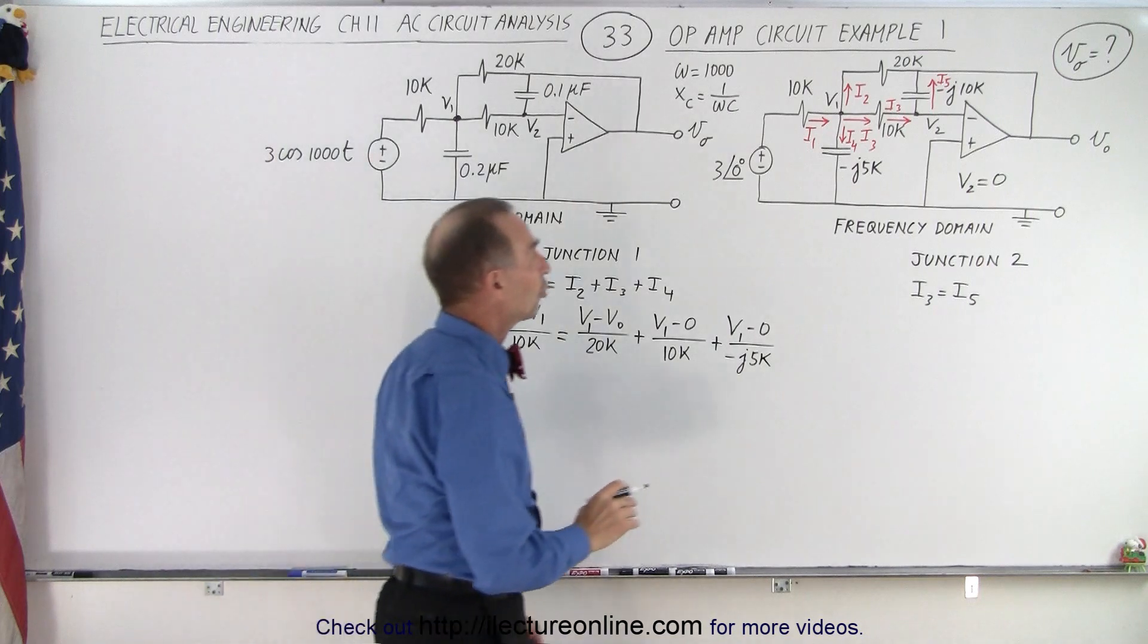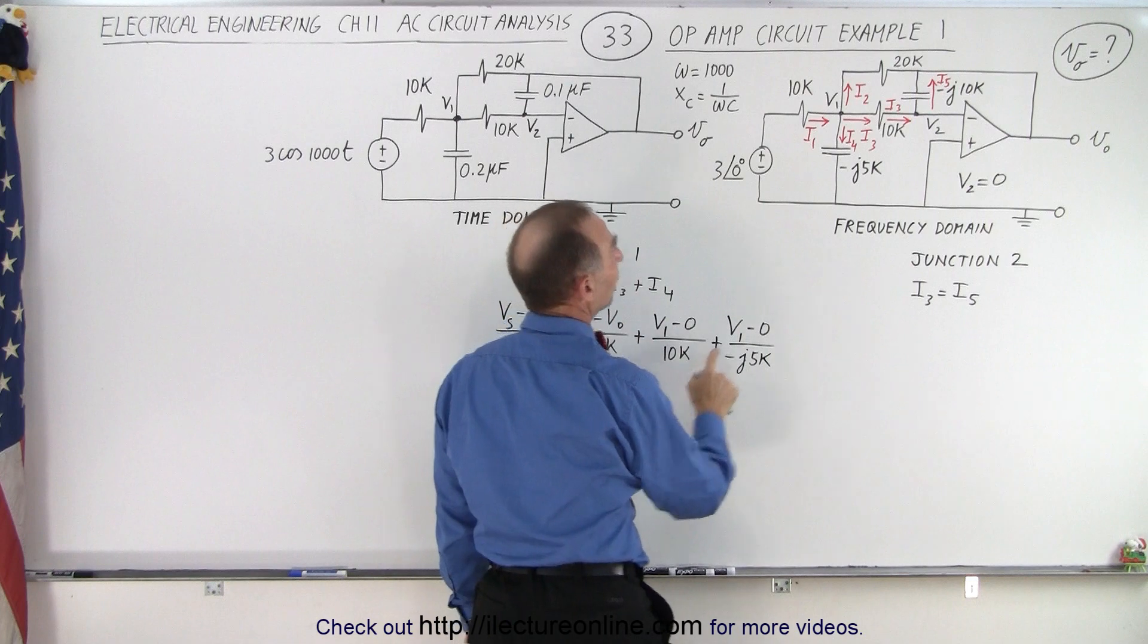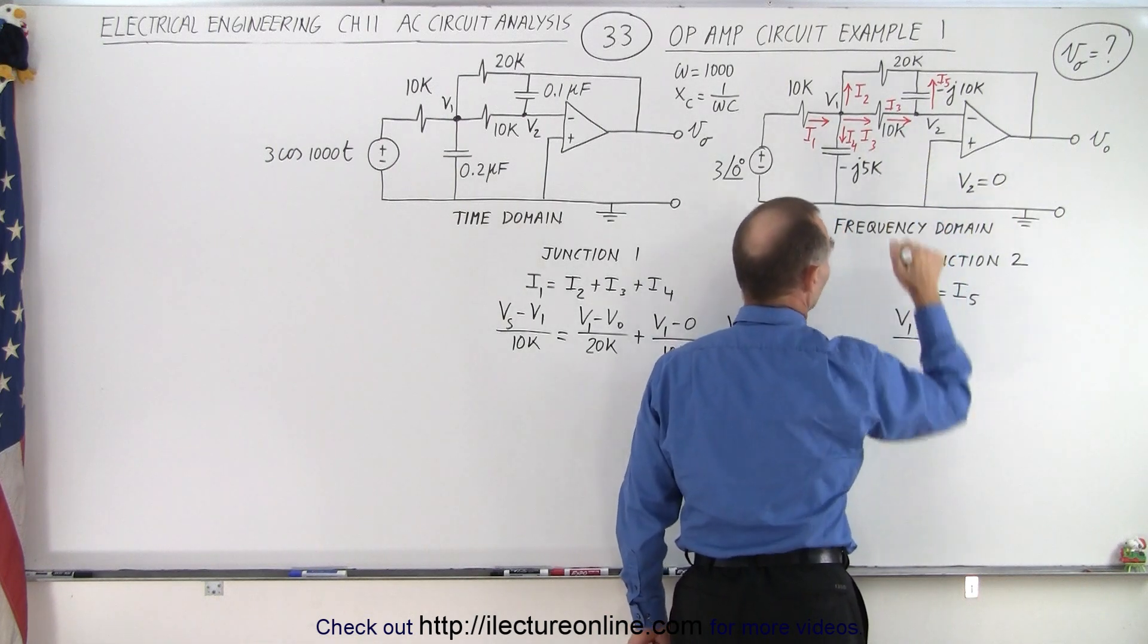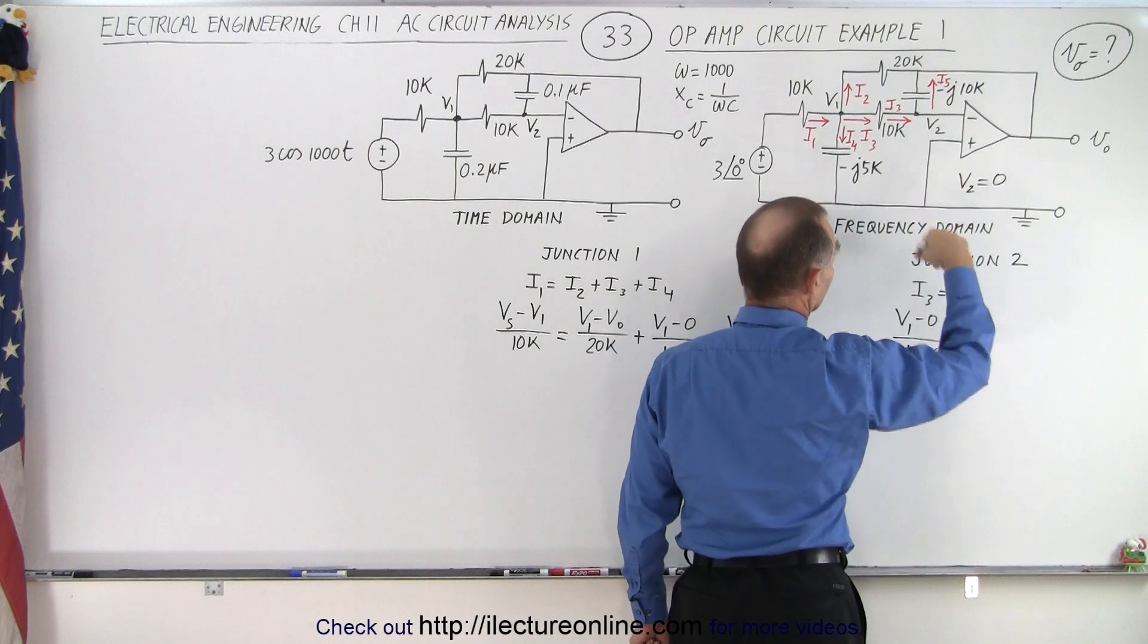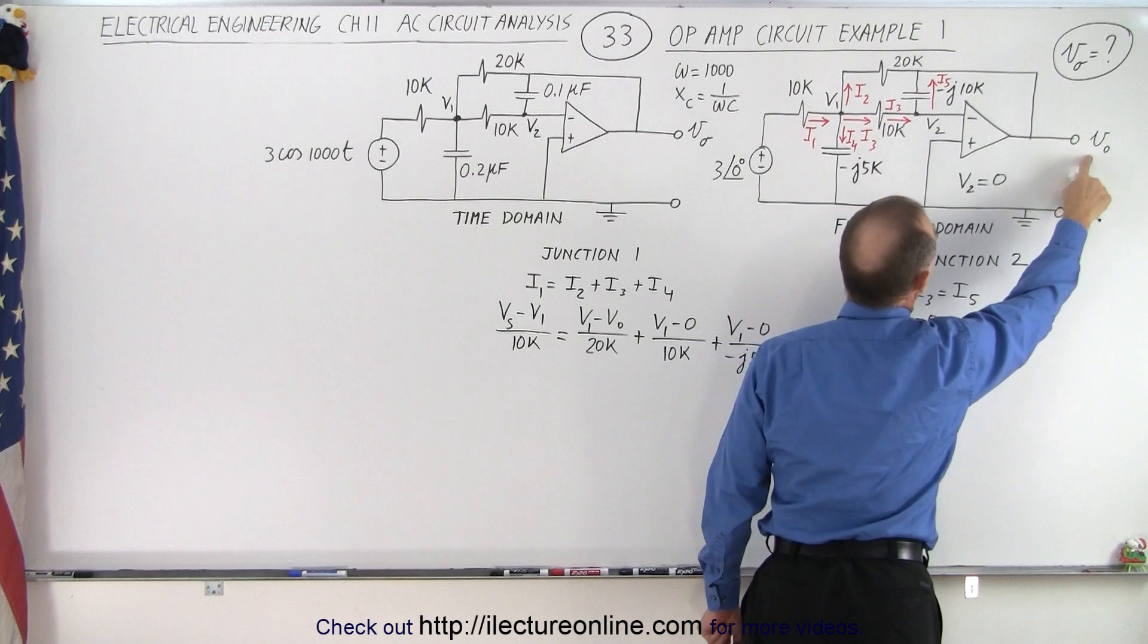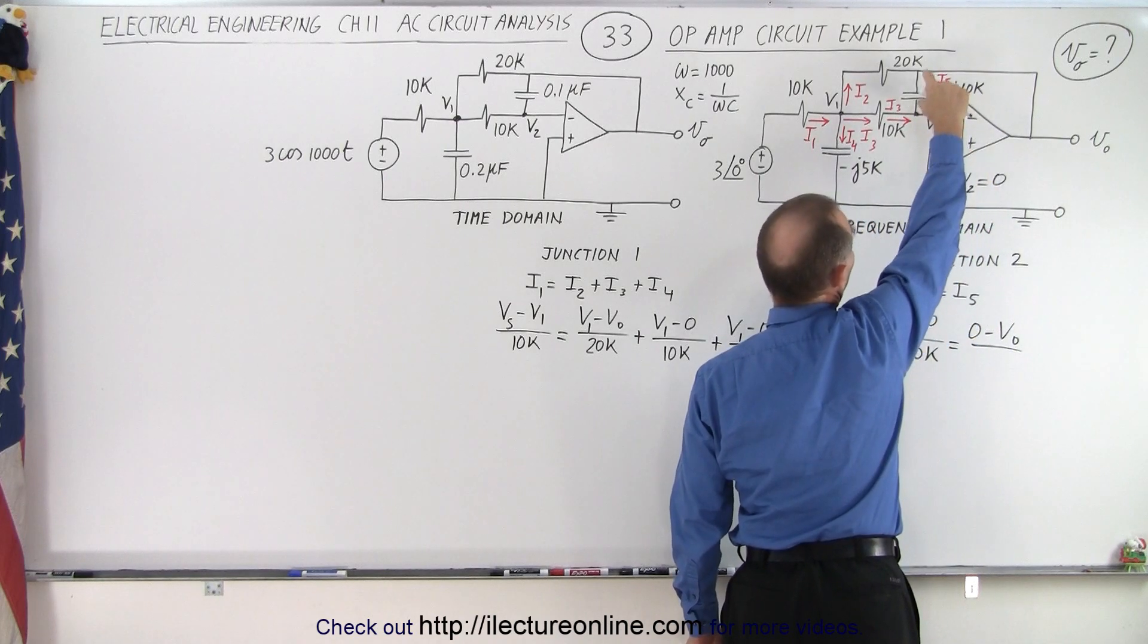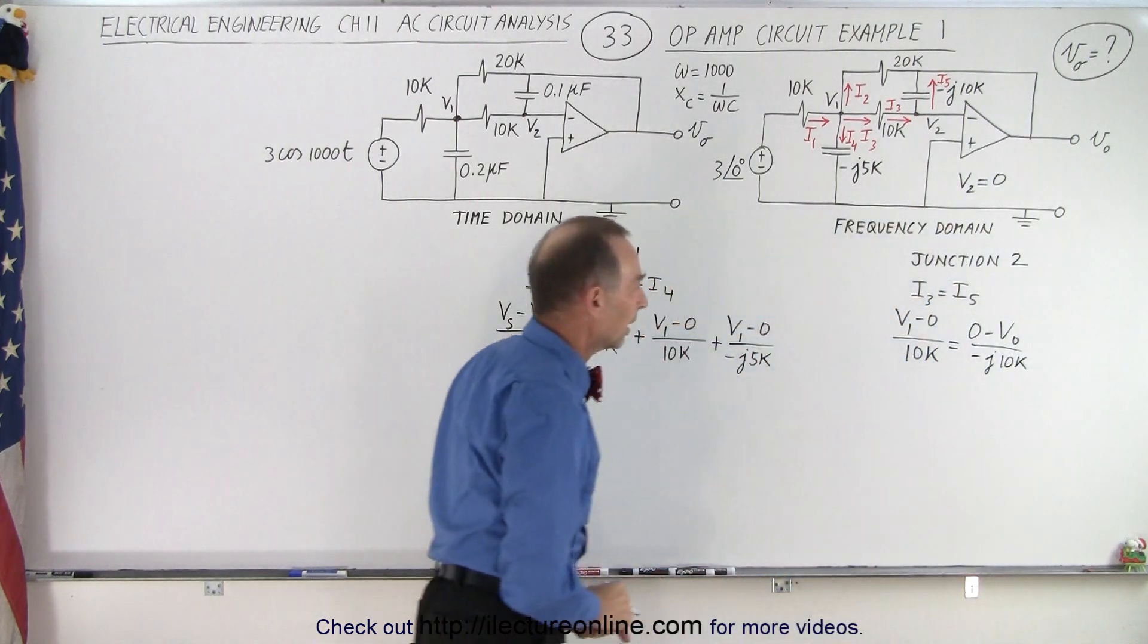Now we go to our second junction here. I3, of course, will be the same as I3 over here. That's this one right here, which is V1 minus V2, but V2 is zero. So V1 minus zero divided by the resistance, 10k. And that must equal the current going up this way. So that's V2, which is zero, minus V0, Vout. So that would be zero minus Vout divided by the impedance right there, which would be a minus J10k.